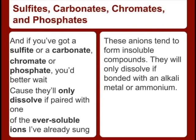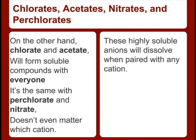And if you've got a sulfate or a carbonate, chromate or phosphate, you better wait, cause they'll only dissolve if paired with one of the ever-soluble ions. On the other hand, chlorate and acetate will form soluble compounds with every one. It's the same with perchlorate and nitrate — doesn't even matter which cation.